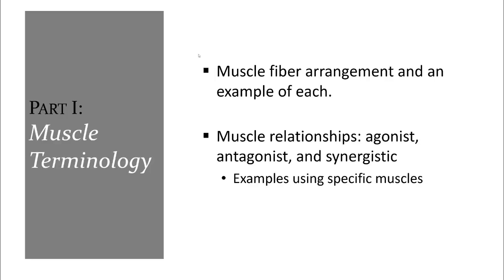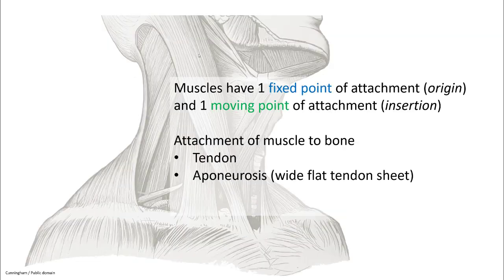For muscle terminology, we'll discuss the arrangement and relationships of muscles. Skeletal muscles move or stabilize joints. They have bony attachments via tendons or aponeurosis. Usually, the stationary or proximal attachment is the origin, and the more distal or moving portion is the insertion. However, there are exceptions to this.